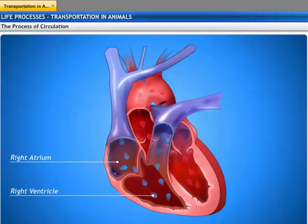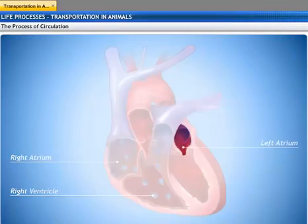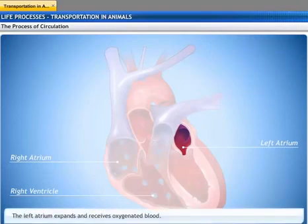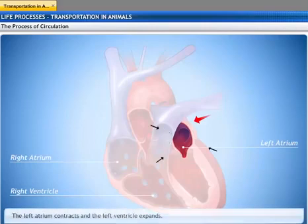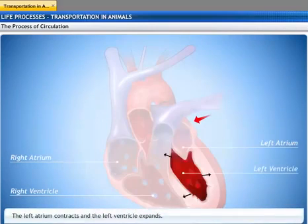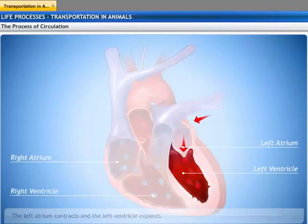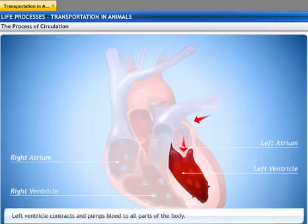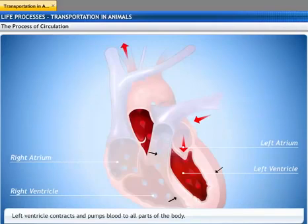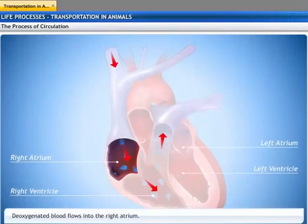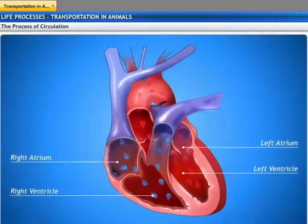Blood is oxygenated in the lungs and is carried back into the left atrium of the heart. The left atrium relaxes when it is collecting the blood from the lungs. It then contracts while the left ventricle expands, so that the blood is transferred to it. The muscular left ventricle then contracts in order to pump blood to all parts of the body. Deoxygenated blood from different parts of the body flows into the right atrium of the heart once again — this is how the heart helps in the circulation of blood.